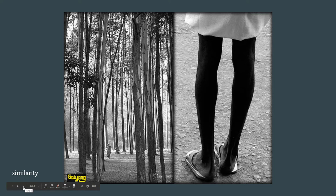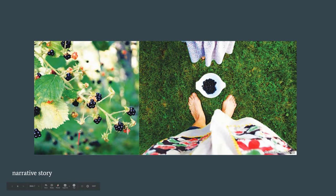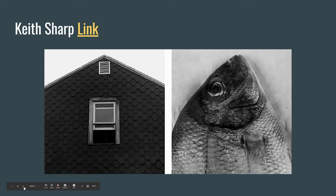Images might also be put together to tell a narrative story. We have these little blackberries, and then we see two feet and two different people with a bowl of blackberries — it kind of tells a story: it was a beautiful summer day and they went out and collected these blackberries. So those are four different ways to combine images to form a diptych, though there are other ways as well.